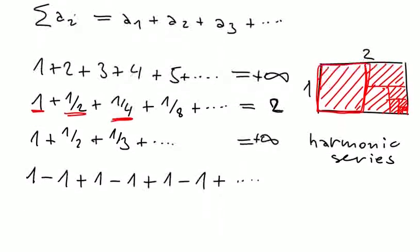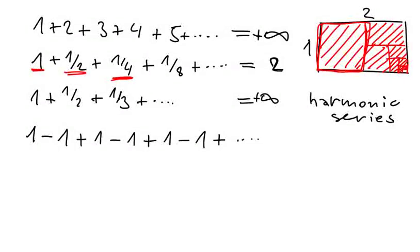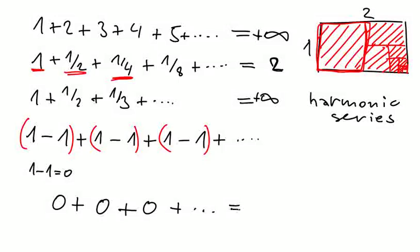So what we can do is to use the following idea. We group the numbers into pairs, like this. And now every pair is 1 minus 1 equals 0. So in fact we have 0 plus 0 plus 0 and so on. This is nothing difficult. This is just 0.